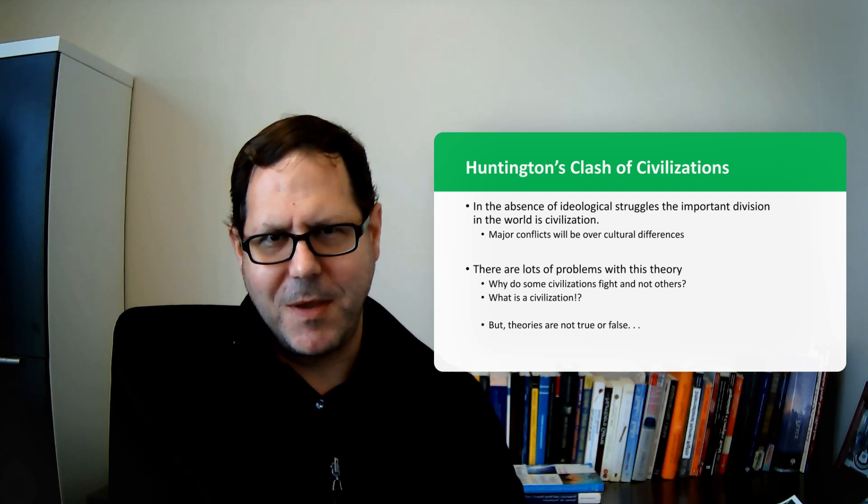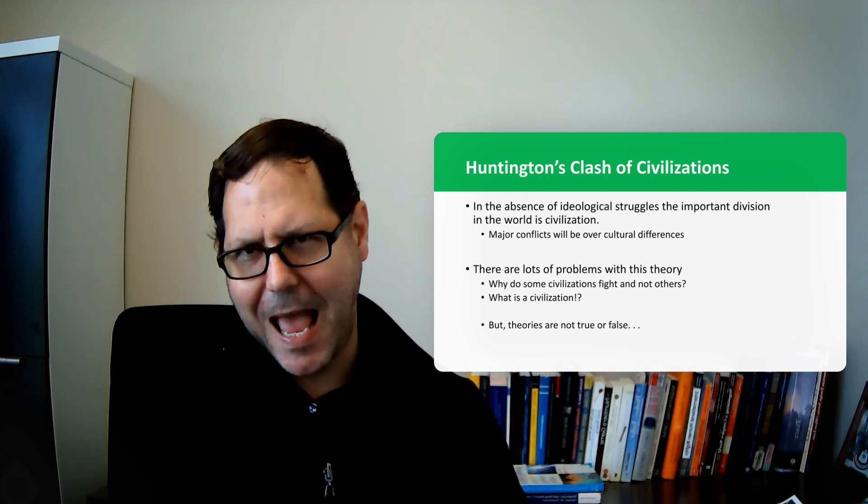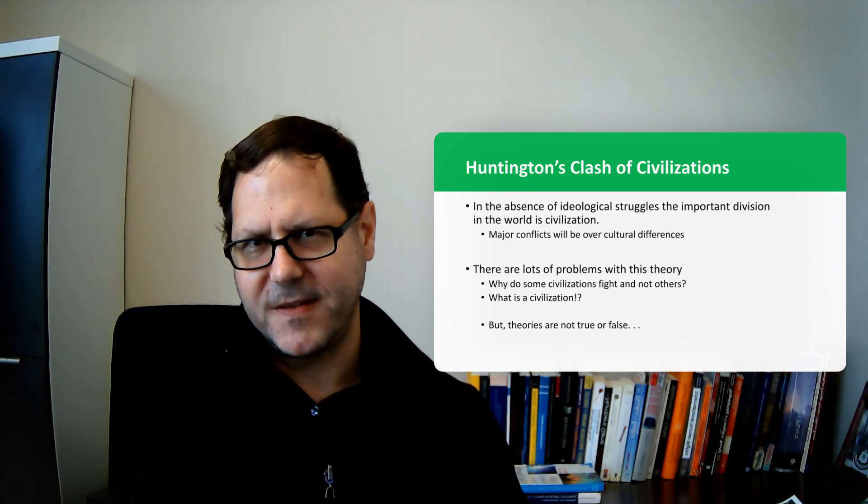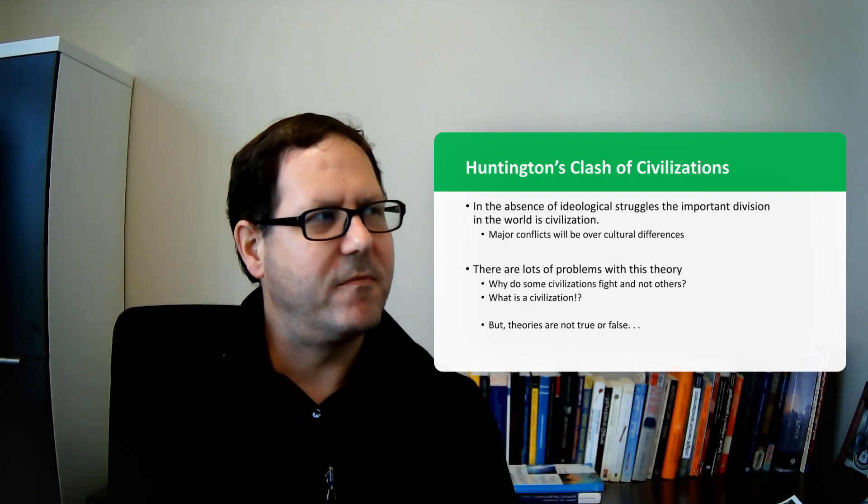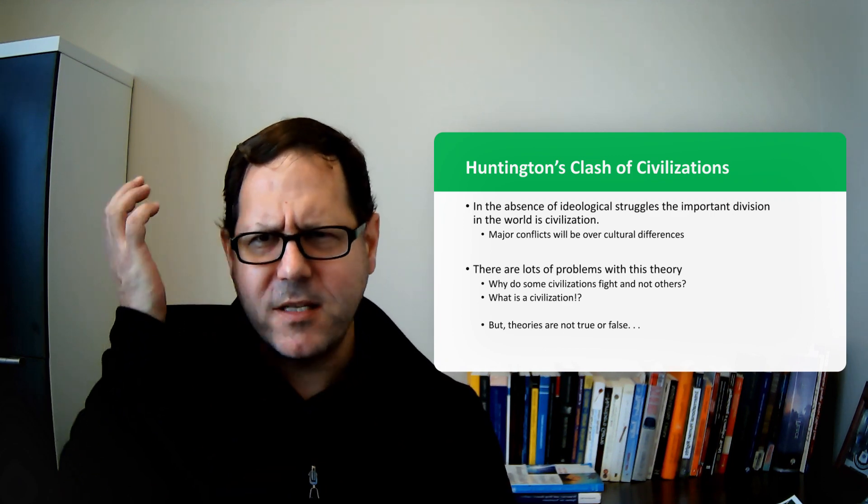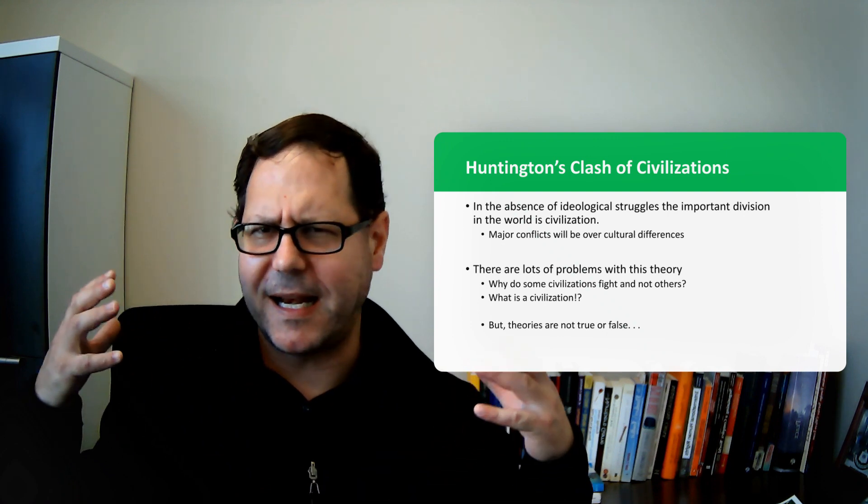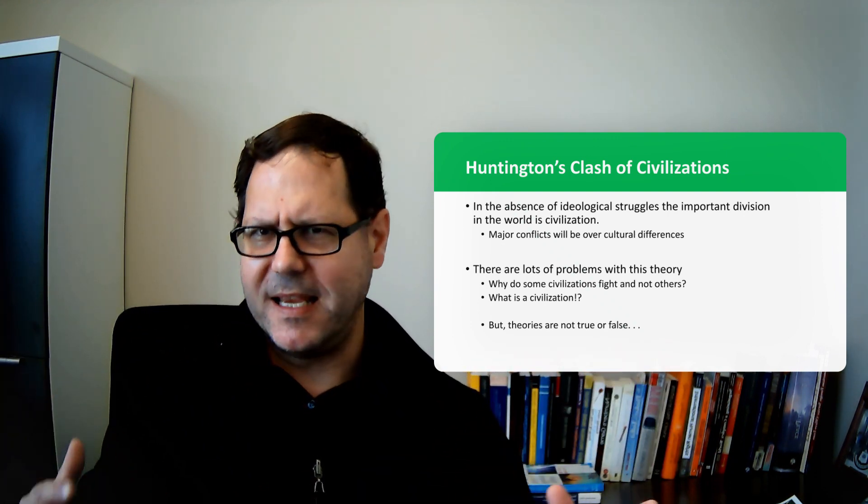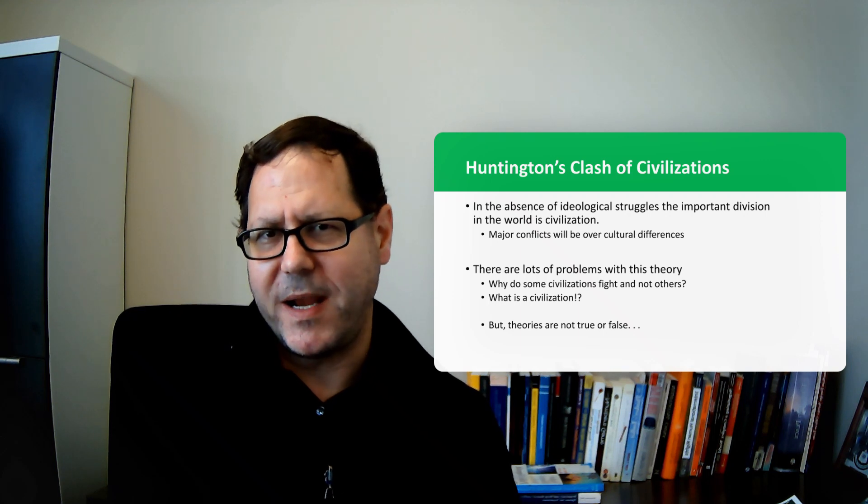The other explanation I could maybe give is that yes we can nitpick this map. Yes there are things that are left out of Huntington's civilization framework but theories aren't true. All theories are lies. All theories are false. All theories take an incredibly complex world and simplify it down and say these are the pieces we need to make sense of the world.